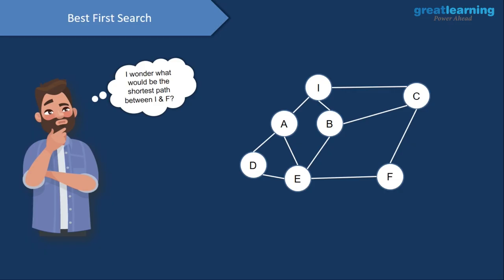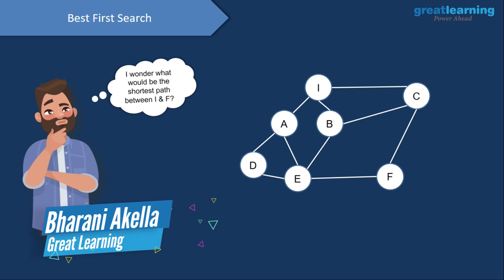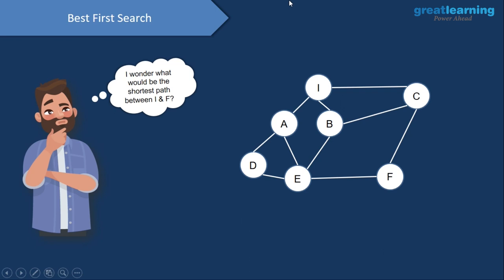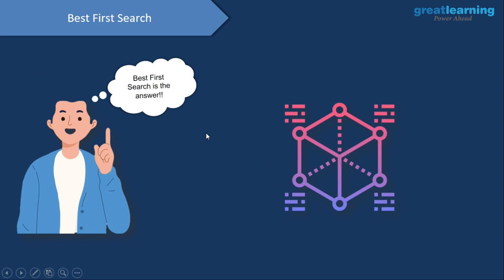We have Sam, who is pursuing his graduation in the field of analytics. He has been given an assignment by his professor — a particular graph where he has to find out the shortest path between nodes I and F. Sam is pretty new to graphs and artificial intelligence, so he goes to his senior Matt, who is good at AI. Matt tells Sam that the answer can be found using the best first search algorithm.